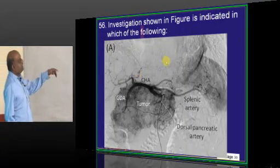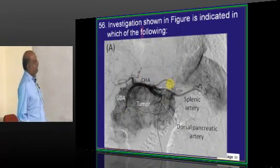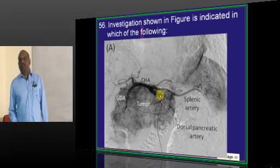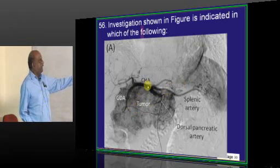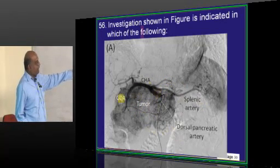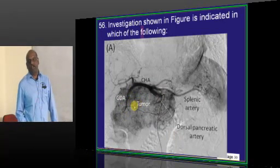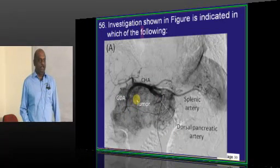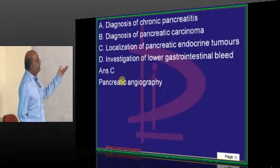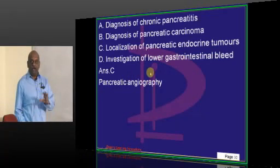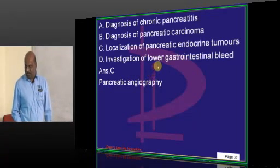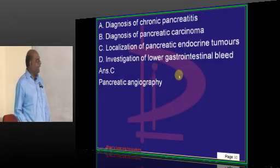Then, what is the investigation shown in the figure and what is it used for? There is a splenic artery, dorsal pancreatic artery, etc. This is called pancreatic angiography. So pancreatic angiography is basically used for localization of the endocrine tumors like insulinoma.